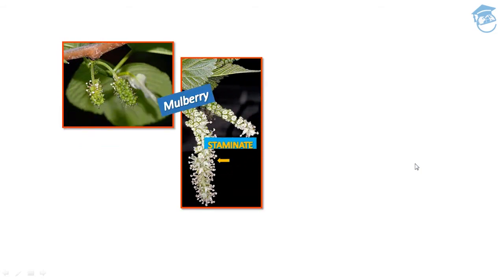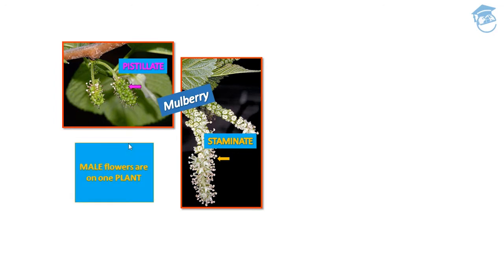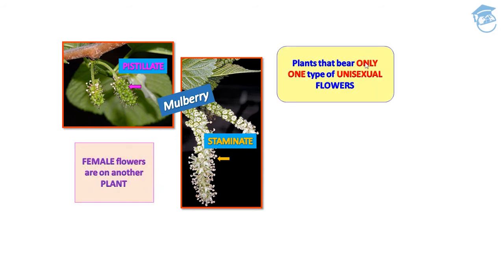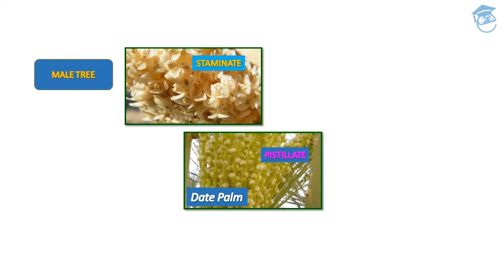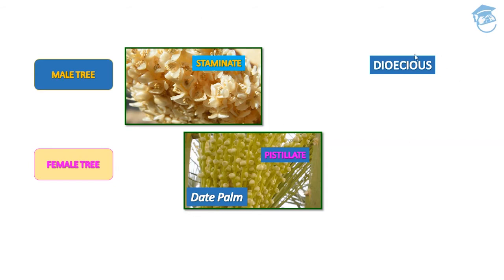Plants that bear only one type of unisexual flower are called dioecious, unlike monoecious plants. Male flowers are on one plant and female flowers on another. For example, the date palm has only female reproductive organs (pistillate flower) and is called a female tree, while the staminate tree has only androecium. Such plants are called dioecious plants.